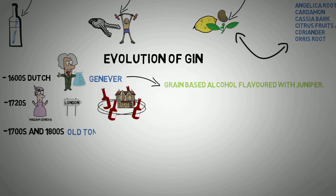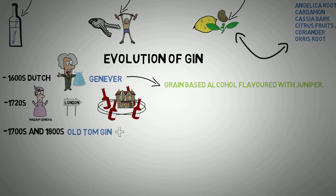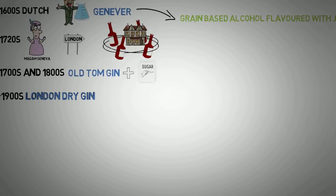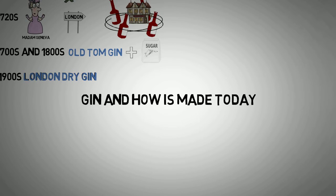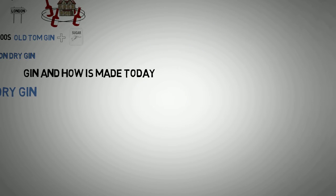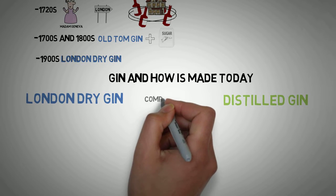In the 1700s and 1800s there was a rise of Old Tom gin, which was gin used to make cordials and liqueurs, and eventually it was sweetened with sugar. Finally, in the 1900s, London dry gin emerged — the style of gin made today. We have two main categories: London dry gin and distilled gin, and there is also compound gin.